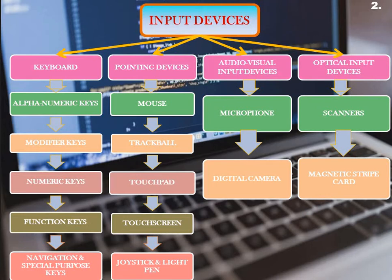As we move the mouse over the surface of the desk, the movements of the ball are detected by the internal mechanism of the mouse. The mouse is connected with the computer through a cable, or like a wireless keyboard, it can also be wireless — Bluetooth-based. A mouse is a handheld hardware input device that controls a cursor in a graphical user interface and can move and select text, icons, files, and folders. For desktop computers, the mouse is placed on a flat surface or mouse pad in front of the computer.